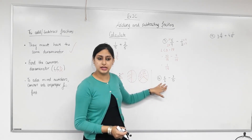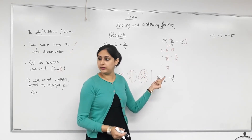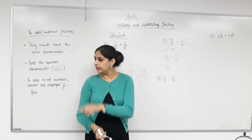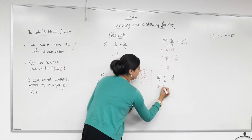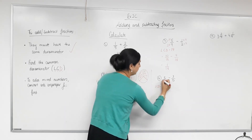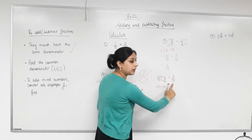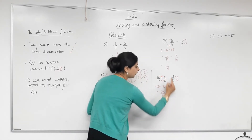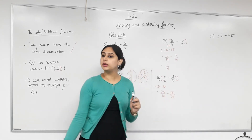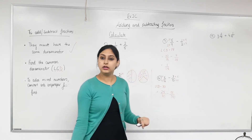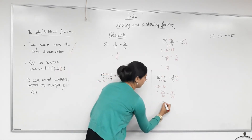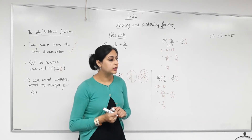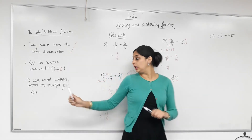Next example: find the lowest common multiple of six and five. Multiples of six: 6, 12, 18, 24, 30. Is 30 a multiple of five? Yes. So the common denominator is thirty. Multiply six by five and do the same to the top; multiply five by six and do the same to the top. That gives twenty-five over thirty minus eighteen over thirty. Twenty-five take away eighteen is seven. The answer is seven-thirtieths — nothing improper, so that's the final answer.